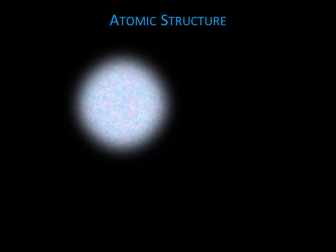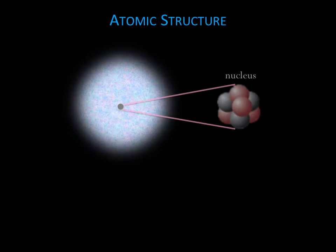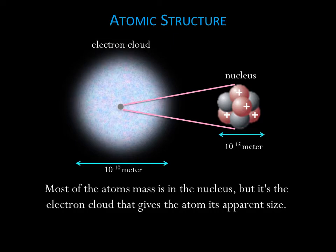At the very center of every atom is a tiny nucleus consisting of positively charged protons and neutral neutrons. The negatively charged electrons surround the nucleus in what we call the electron cloud. Most of the atom's mass is in the nucleus, but it's the electron cloud that gives the atom its appearance.